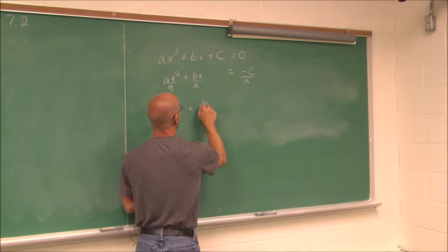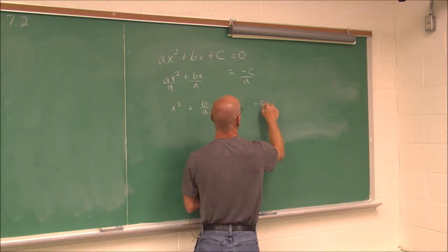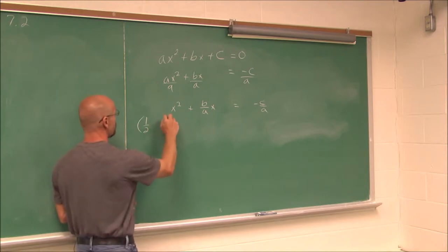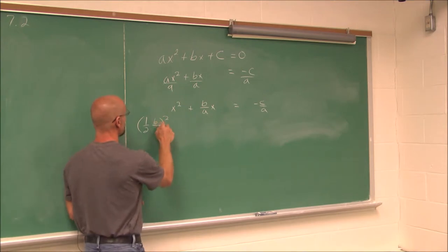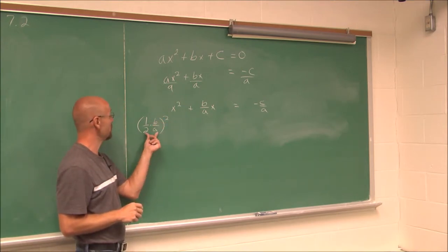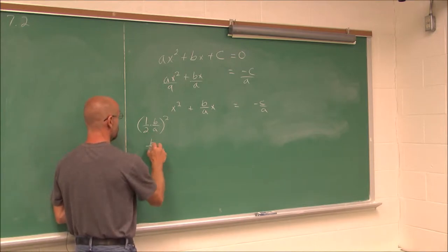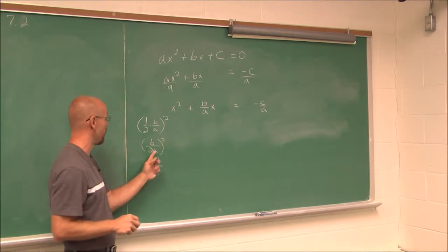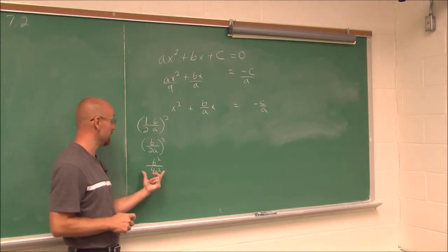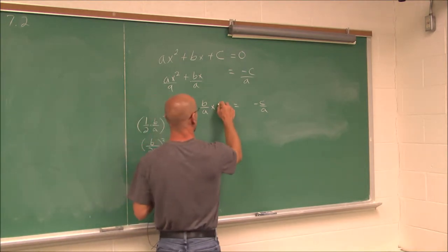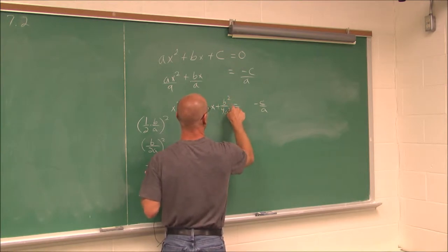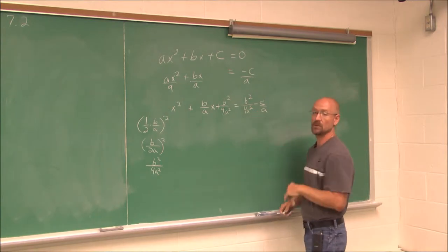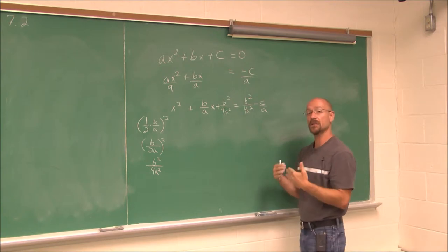Now we have x squared plus b over a times x equals negative c over a. We're ready to complete the square. We take one half of the b term and square it — but the b term is now a fraction. Multiplying gives us b over 2a, and squaring gives b squared over 4a squared. Even though this doesn't look nice, it's the value we add to both sides of the equation.